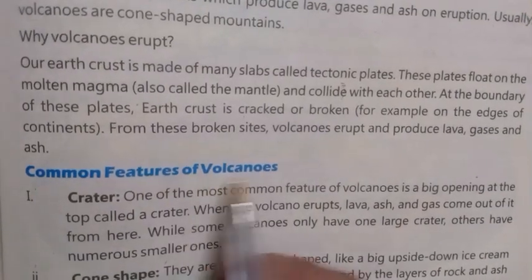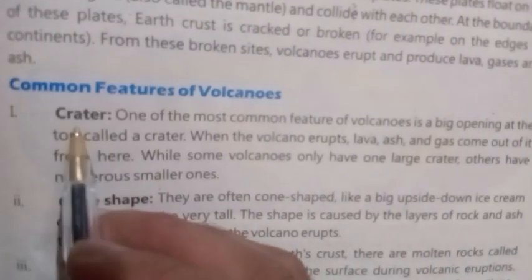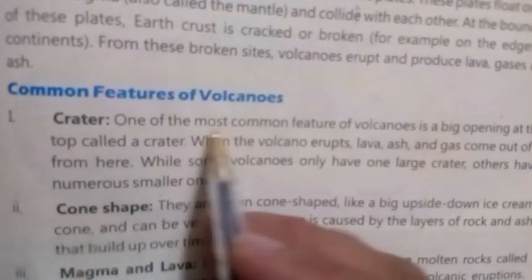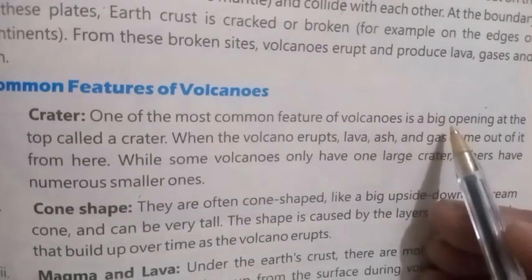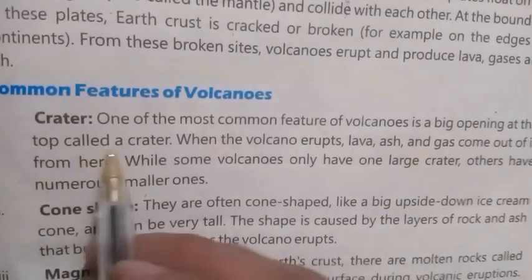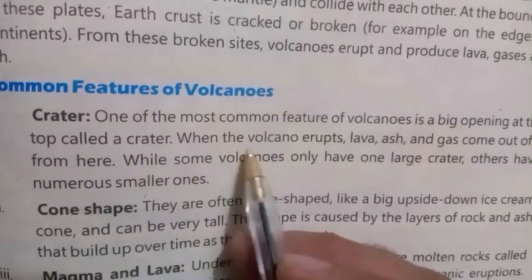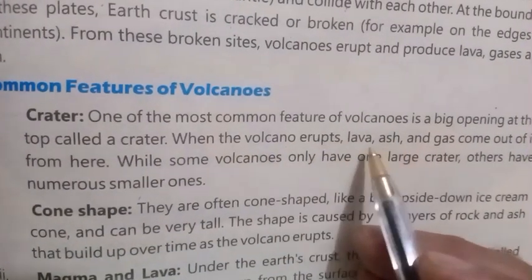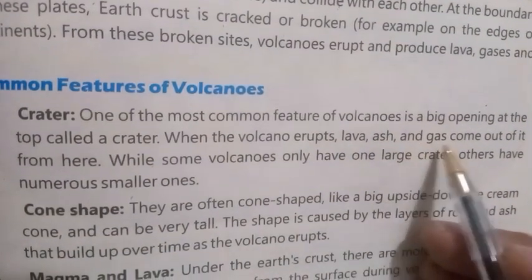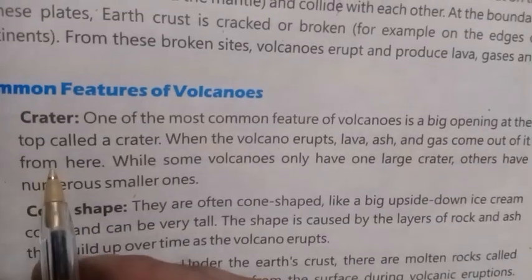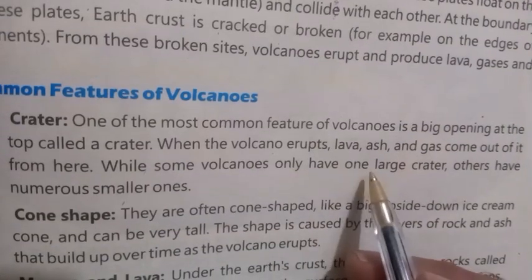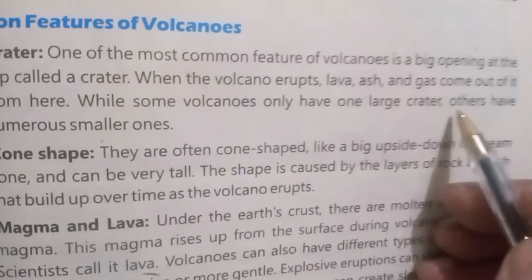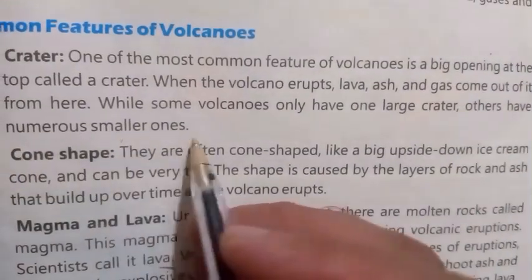Common features of volcanoes. Number one: Crater. One of the most common features of volcanoes is a big opening at the top called a crater. When the volcano erupts, lava, ash, and gas come out from here. While some volcanoes only have one large crater, others have numerous smaller ones.